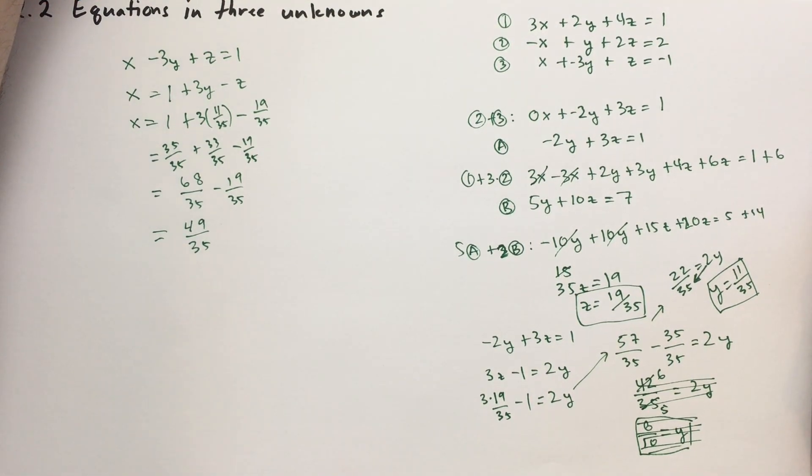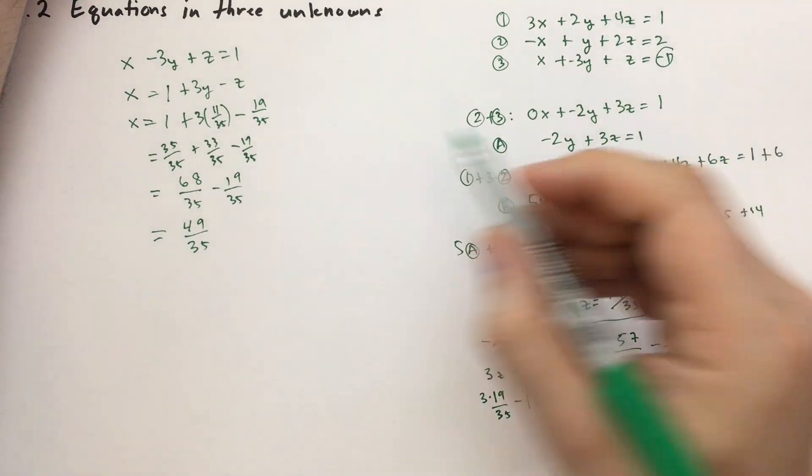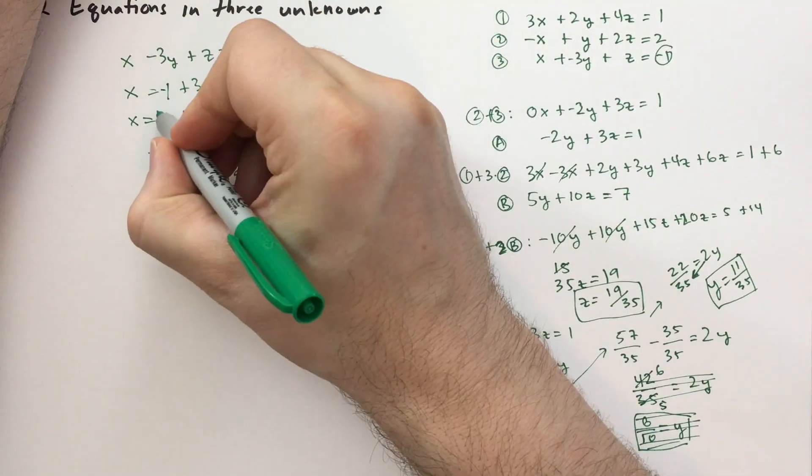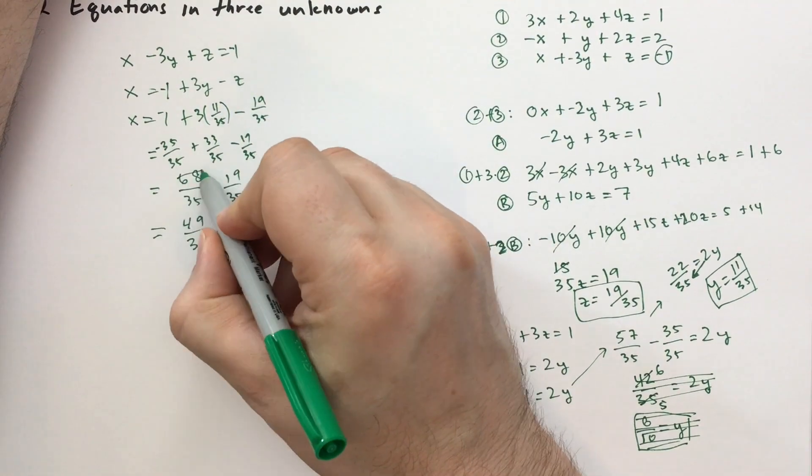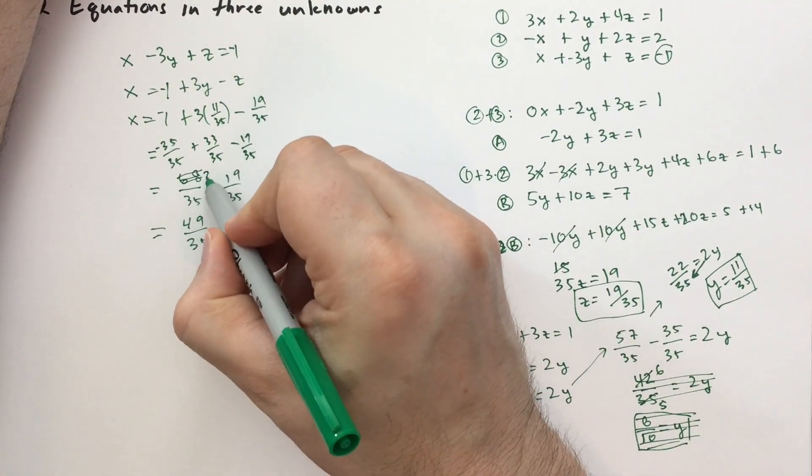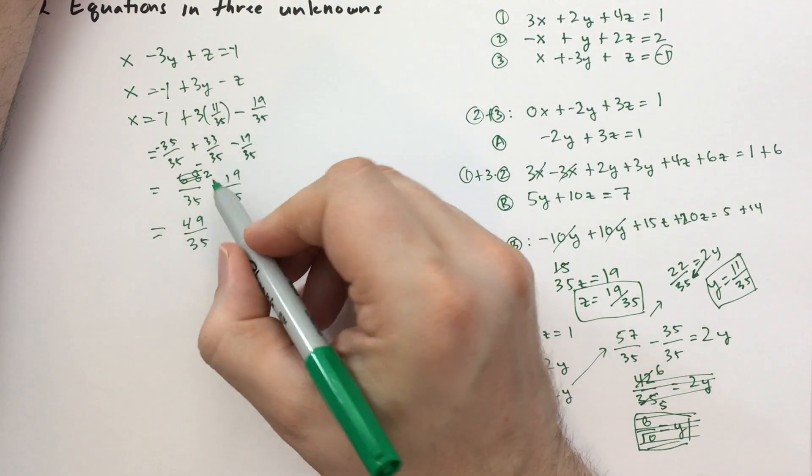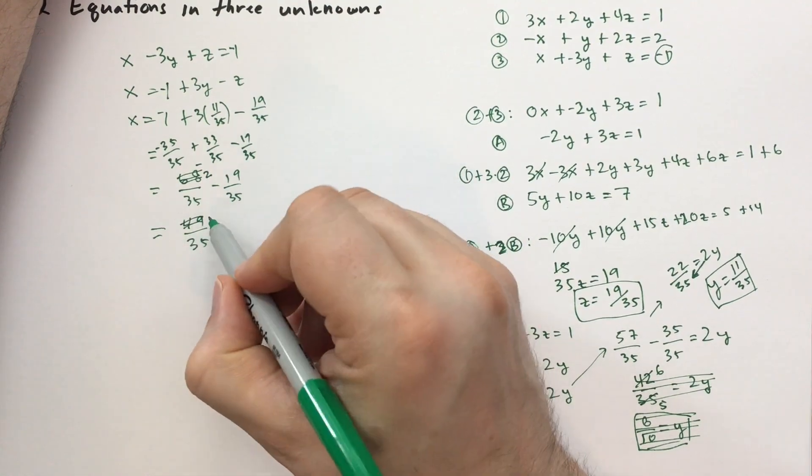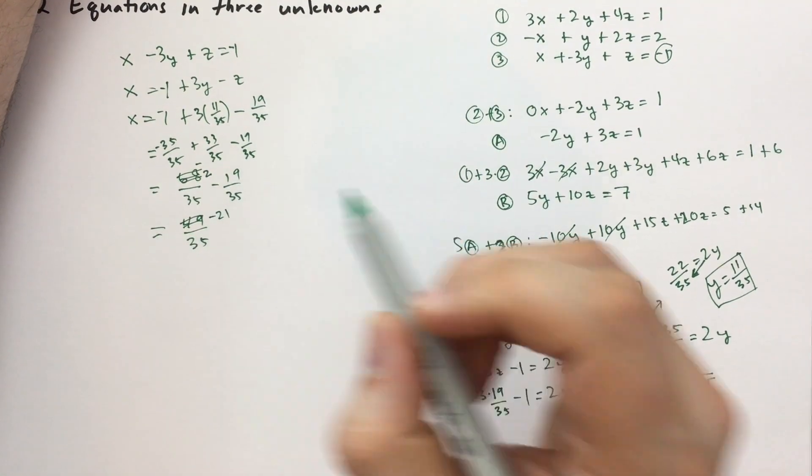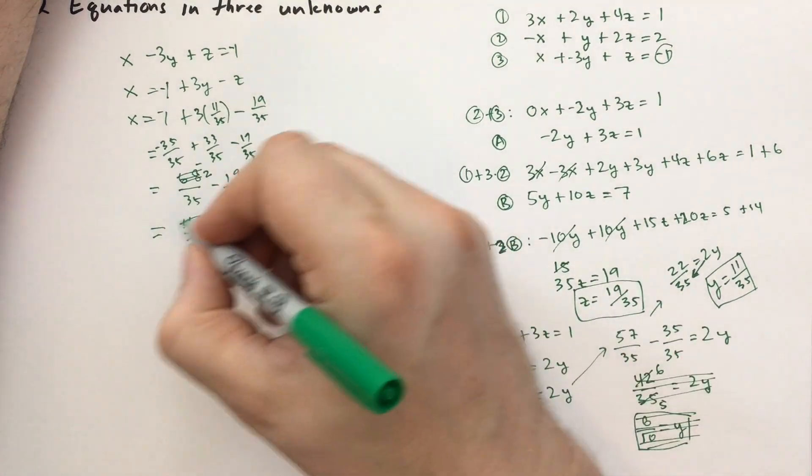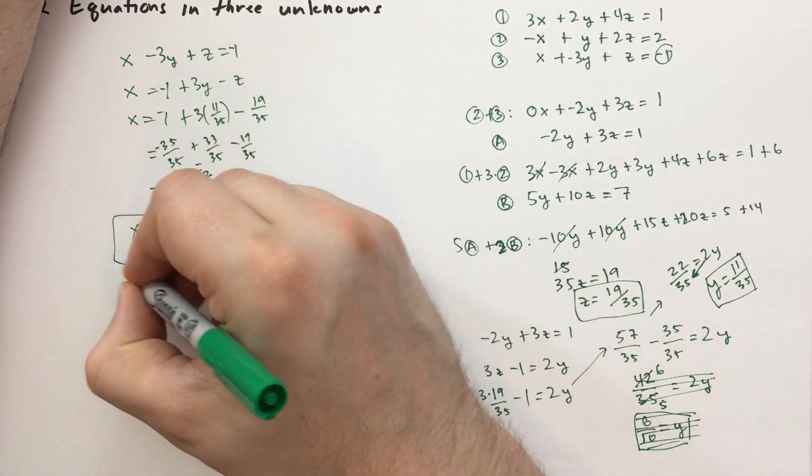x is minus 21 over 35. So I did something terribly wrong. What did I do wrong? x equals minus 1. Ah! Look at that. Minus 1. This is supposed to be minus 1. This is minus 35 over 35. So this isn't 68. This is negative 2. Plus 33. Minus 2 plus 33 minus 19 is minus 21 over 35. Is that the right one? Yes, that's the right answer. x is minus 21 over 35. All right.